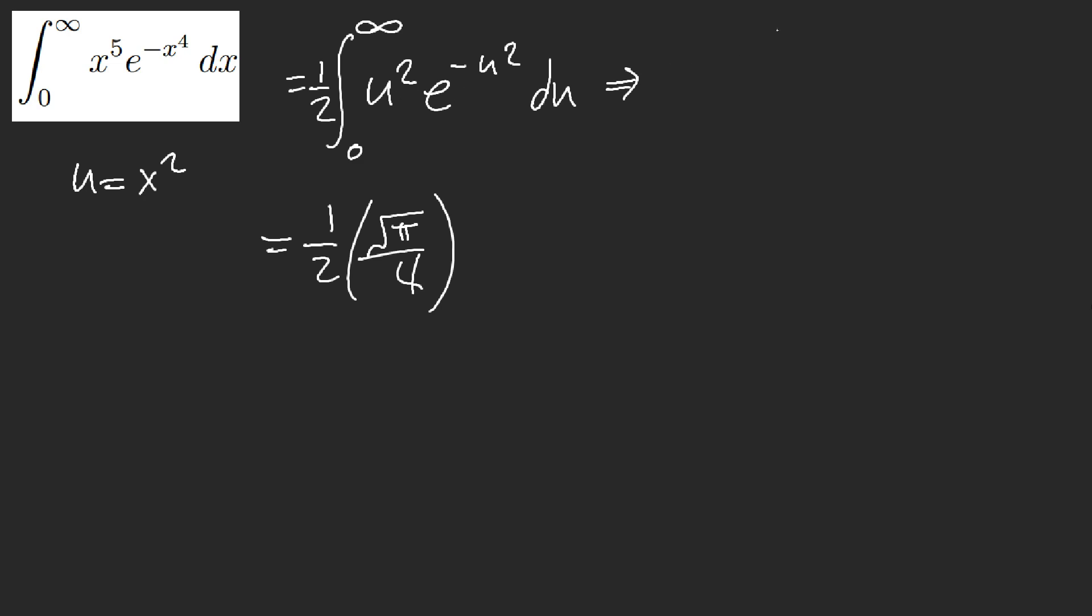Whenever you see something like this, you do integration by parts. So it's u times u e to the negative u squared, okay? Then you get negative 1 here, and you get negative half of e to the negative u squared, okay? So this and this, right?